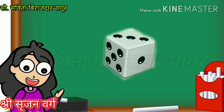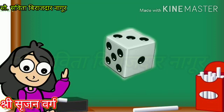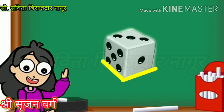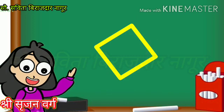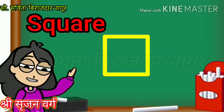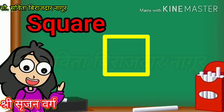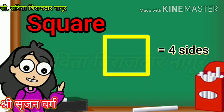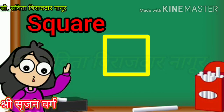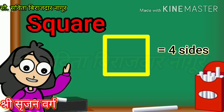Students, now take a dice. Place it firmly and draw lines moving your pencil along the dice. Remove the dice and observe the shape. This is a square. Count each side — one, two, three, four. It means a square has four sides, and all sides of the square are equal.